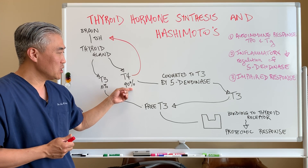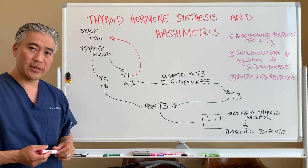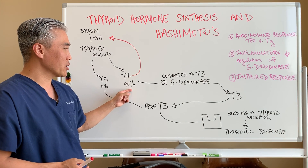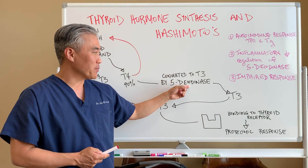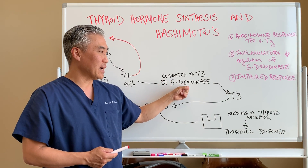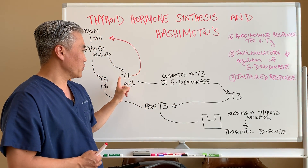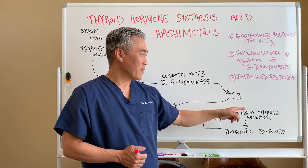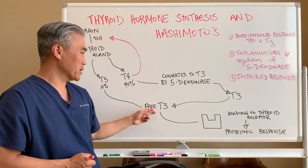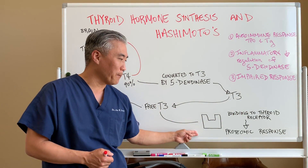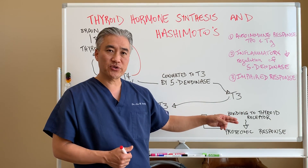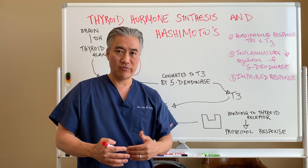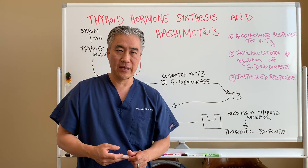Your T4 needs to be converted to the active form of T3. This conversion occurs via an enzyme called 5-deiodinase, which converts your inactive T4 to T3. Then your T3 becomes free T3, where it will bind to a receptor site and will have a proteomic response at that receptor site for metabolic activity.